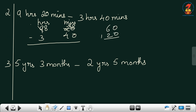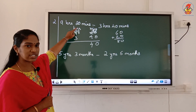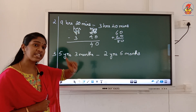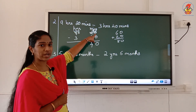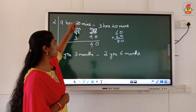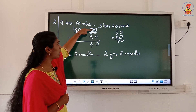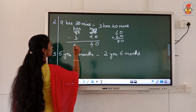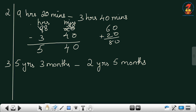I added 60 and 20 to get 80 minutes. Now 80 minus 40: 0 minus 0 is 0, 8 minus 4 is 4. So I have 40 minutes. Then 8 minus 3 is 5 hours. So my answer is 5 hours 40 minutes.